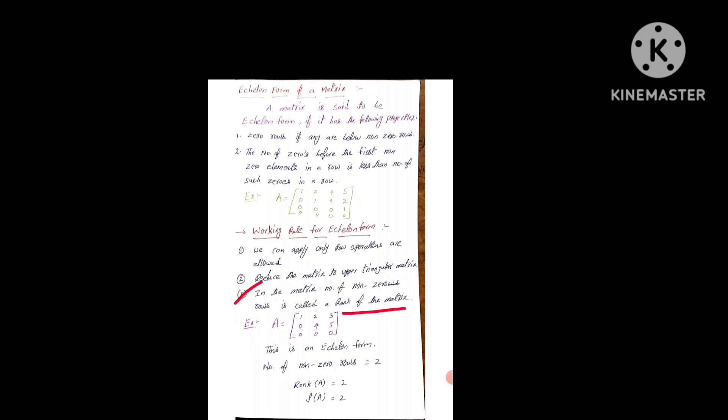Take example one: A is equal to [1, 2, 3 / 0, 4, 5 / 0, 0, 0]. Here, number of non-zero rows: 1, 2. That is why this is an Echelon Form. Number of non-zero rows is 2, so rank of A is equal to 2.